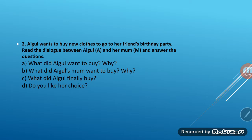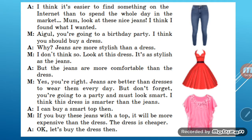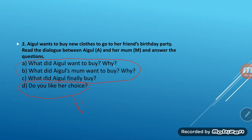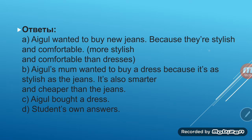Now, let's read the dialogue. The dialogue is in your book. Read the dialogue carefully and answer the questions. Okay, let's check. The first question: 'What did Aigul want to buy? Why?' Aigul wanted to buy new jeans because they are stylish and comfortable — more stylish and comfortable than dresses.